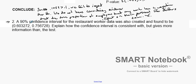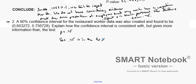As an extension, consider a 90% confidence interval created from the restaurant worker data, which gives an interval from 0.6032 to 0.756. The hypothesis value of 0.75 falls within this confidence interval, so 0.75 is plausible. This is consistent with our test result.